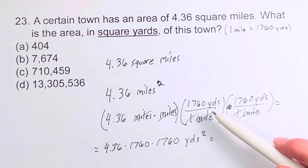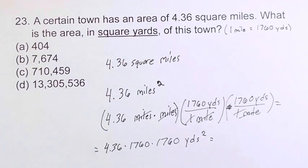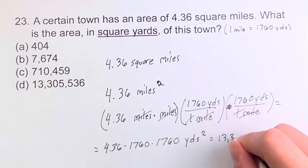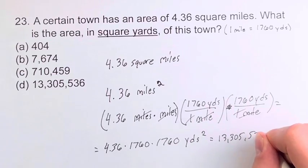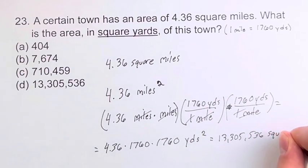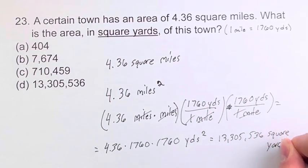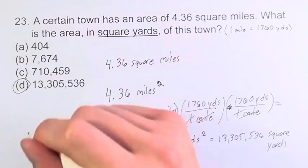This value, obviously, you're not going to want to do in your head or on paper. You multiply this out, and you get 13,305,536 square yards. This, of course, is equal to d, which is going to be your final answer.